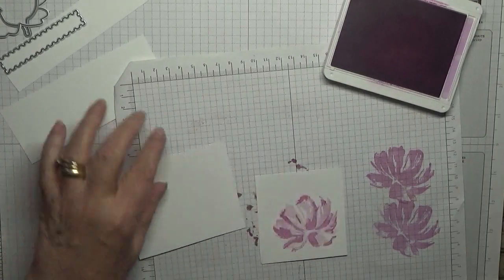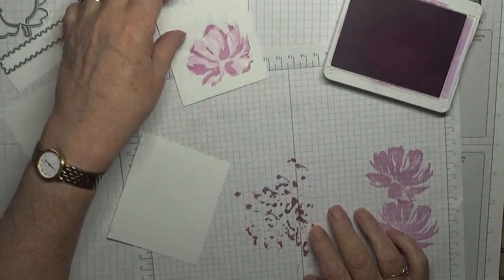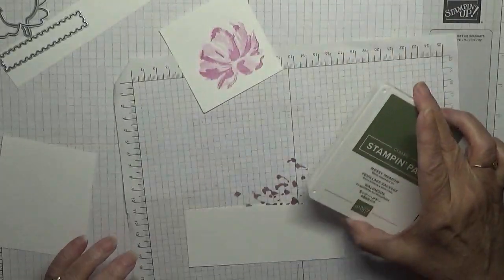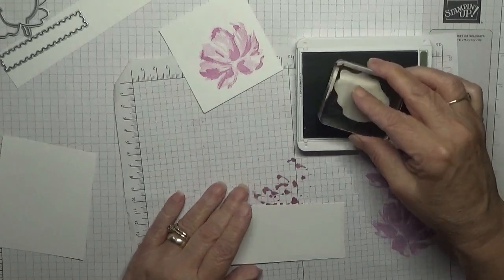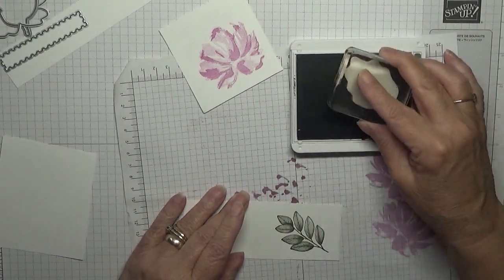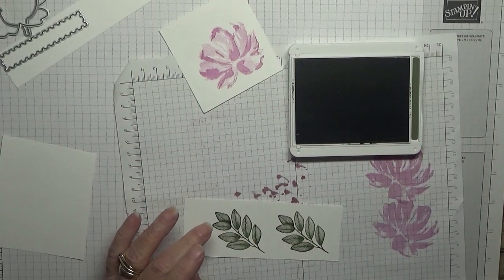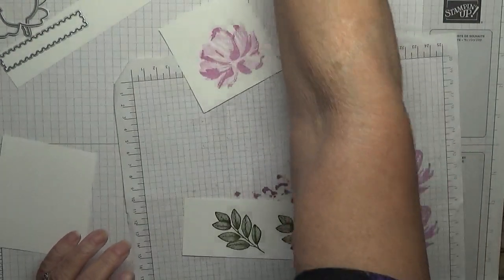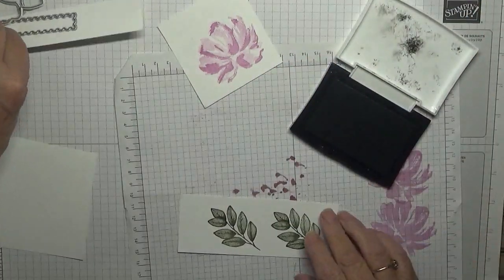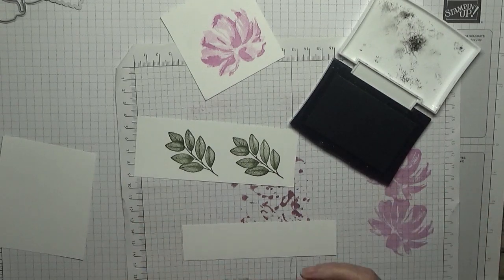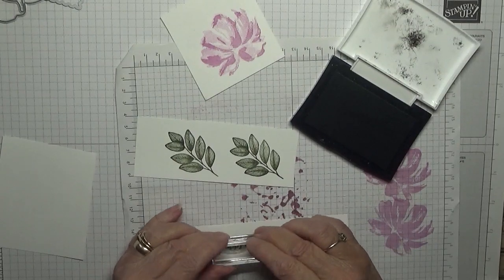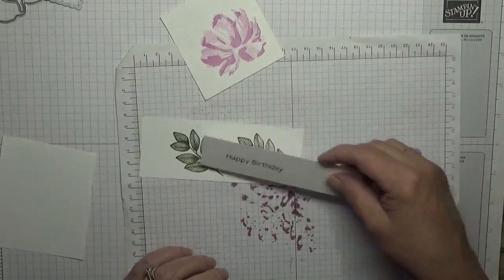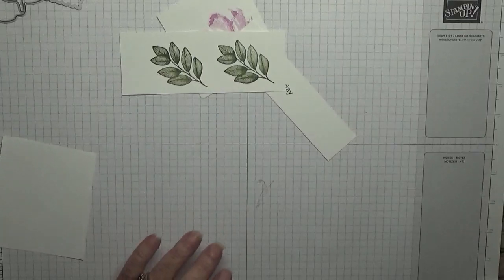I'll cut it off and that will be ready for the die cut. I'm using Mossy Meadow for the leaves and we need two of these. And then with my Versafine Onyx Black we will do the sentiment, and I'll just stamp that in the middle there. That is our stamping done.